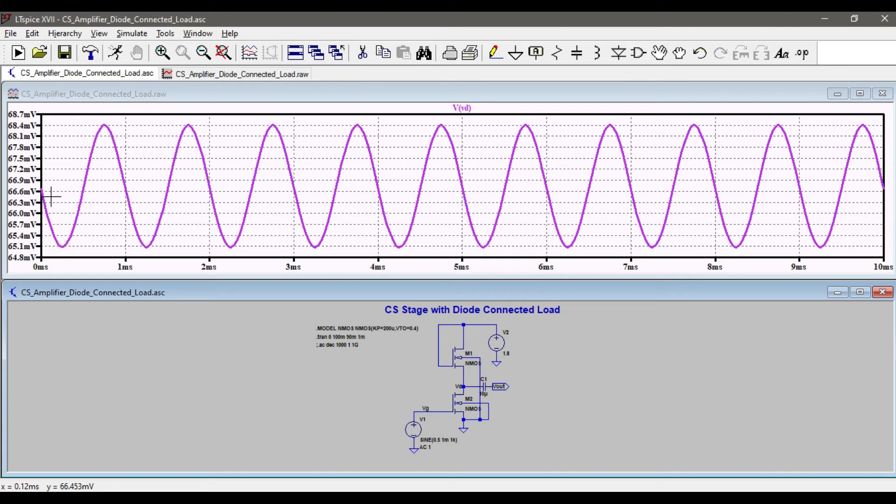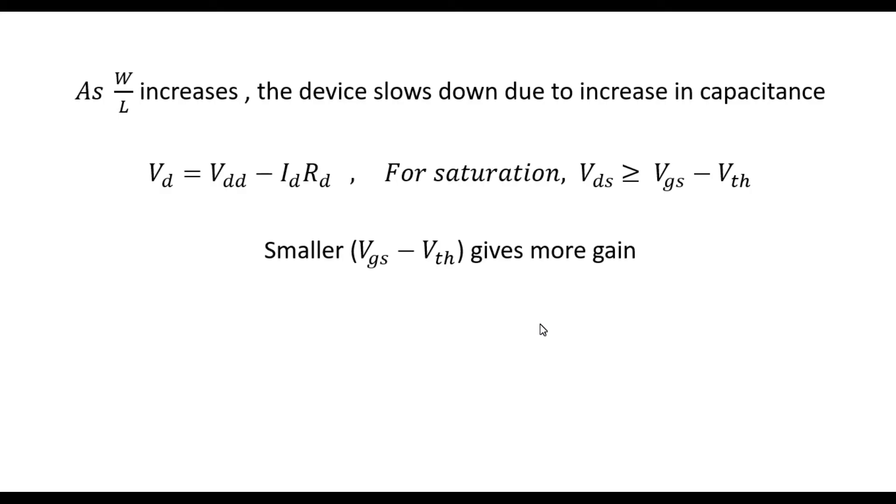Which is 0.6 volts, but what is VG? VG is 0.5 volts and VTH is 0.4 volts as we have given here. So 0.5 minus 0.4 is 100 millivolts. So this VD is less than VGS minus VTH; it entered the triode region.